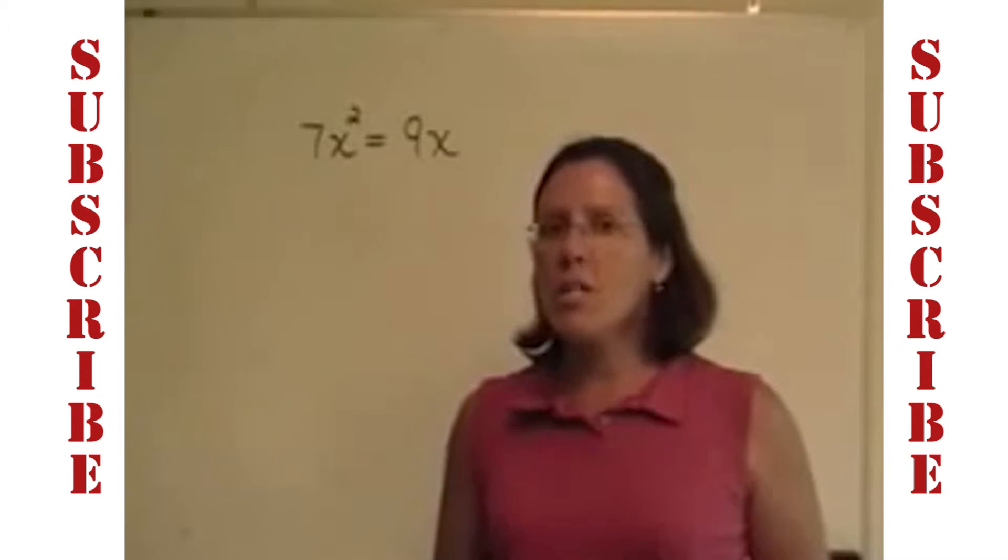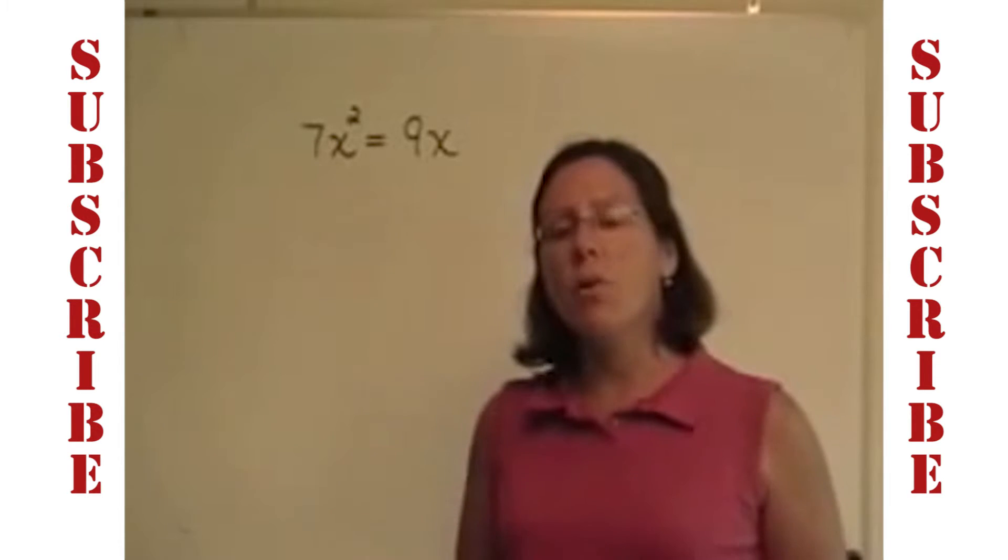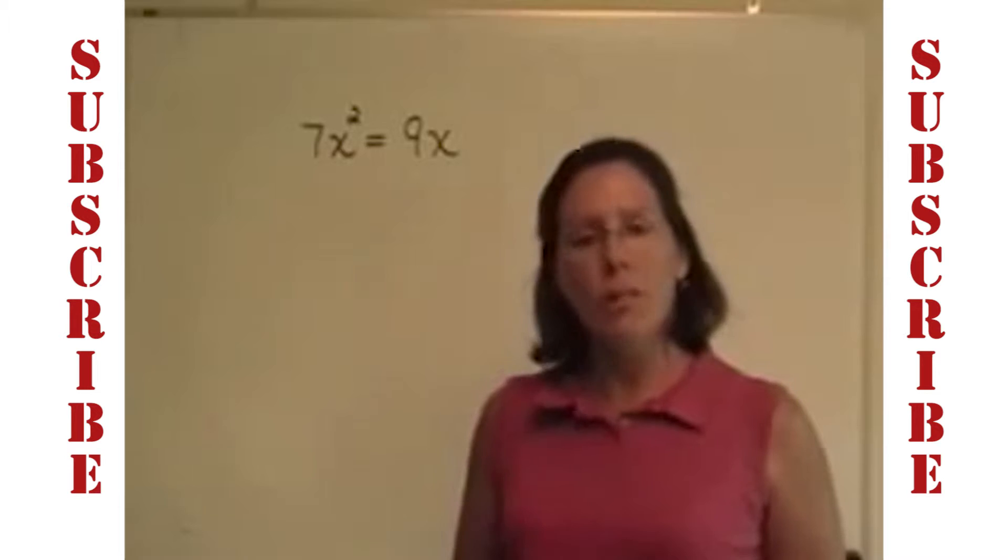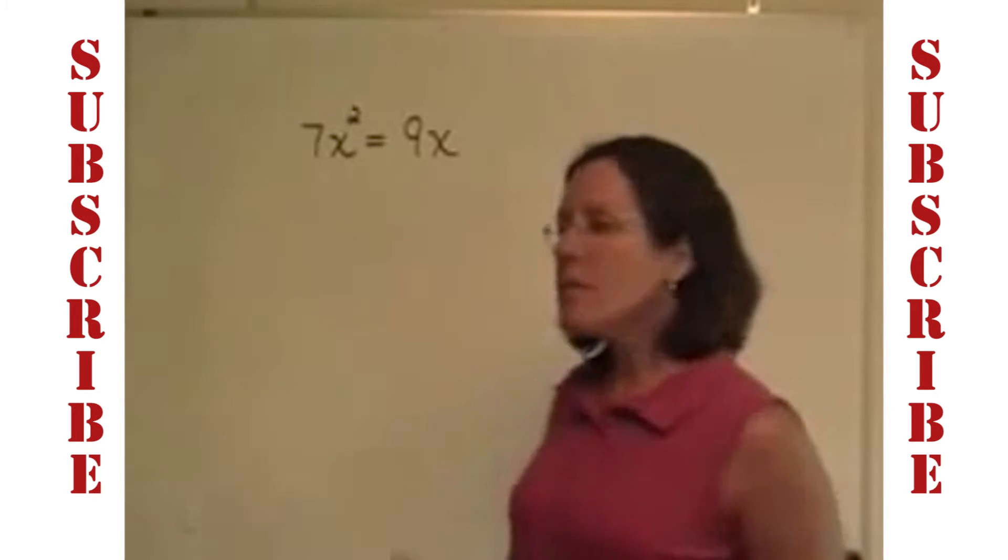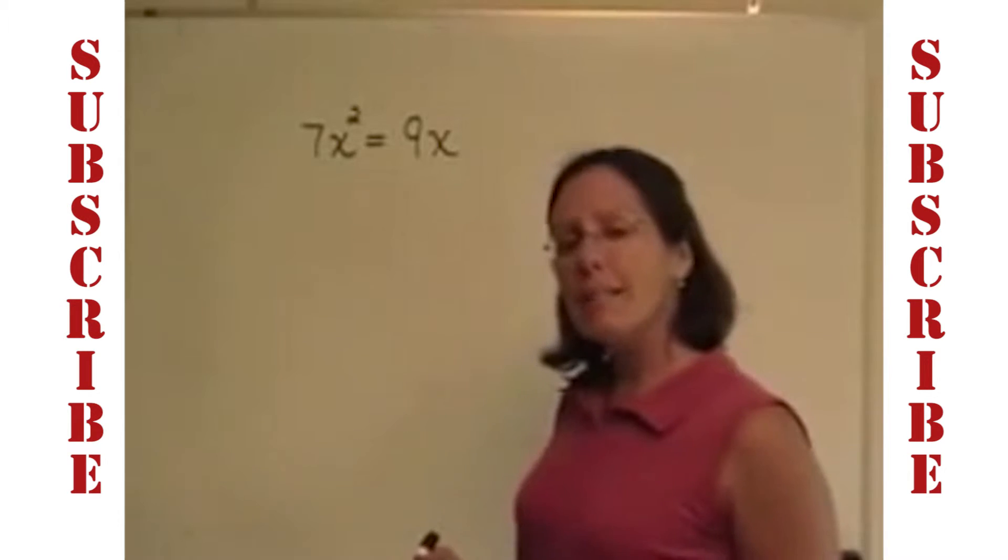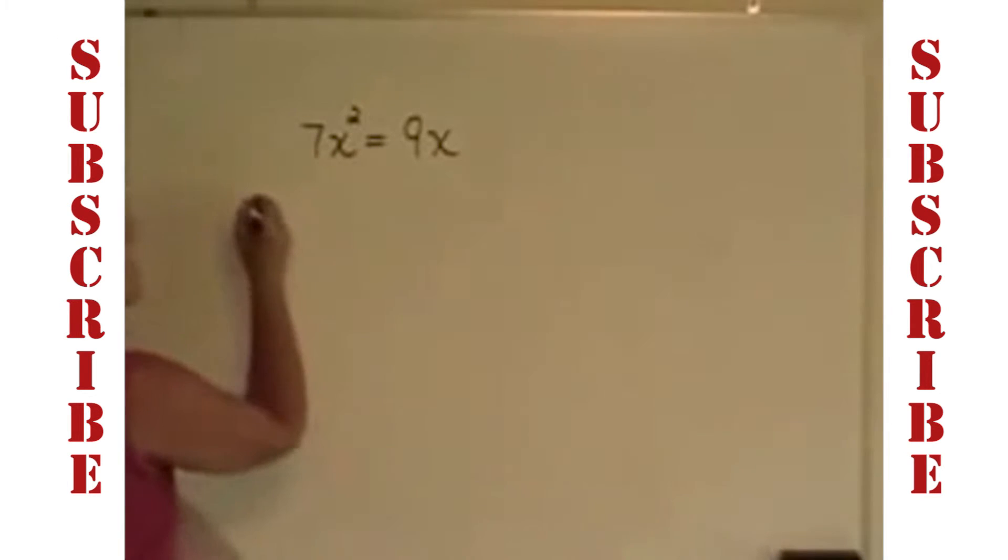If I ask you to solve an equation, and the equation is not set up where all the terms are on one side and 0 is on the other, you need to make that happen. You can't use the zero product rule unless you have 0 on one side. In this problem, I've got 7x squared equals 9x. I'm going to subtract 9x from both sides so that I have 0 on the right and all the terms on the left. I'm going to transpose. I'm not going to show that step.